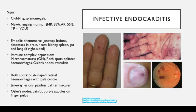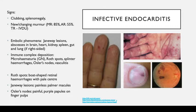Here are pictures of these signs. Osler's nodes are on the finger pulp — they're purple and painful. Janeway lesions are macules on the palmar surface. Splinter hemorrhages are under the nails. Roth spots are retinal hemorrhages with a pale centre visible on fundoscopy. If you go on the ward, try looking out for splinter hemorrhages — you're more likely to see those than the other signs.